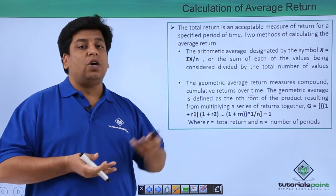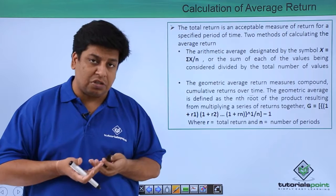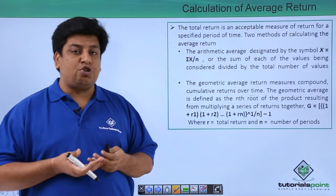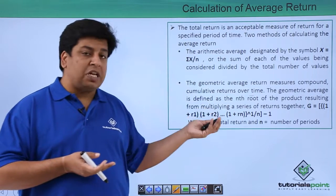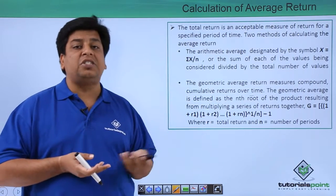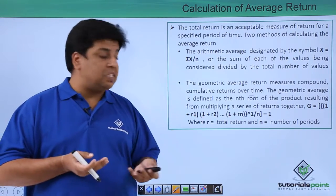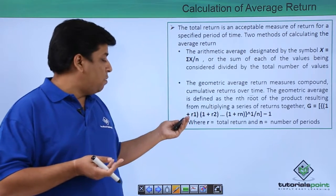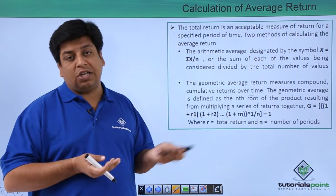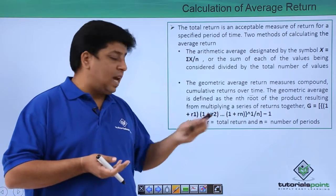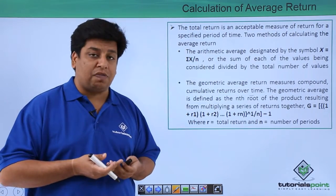This makes you arrive at arithmetic average return. To calculate the geometric average return, you use a different formula where you multiply all the years' returns instead of adding them. The technique is a bit different: (1 + r1) times (1 + r2) times (1 + r3) times (1 + r4), till the nth number of years, where n is the number of years.